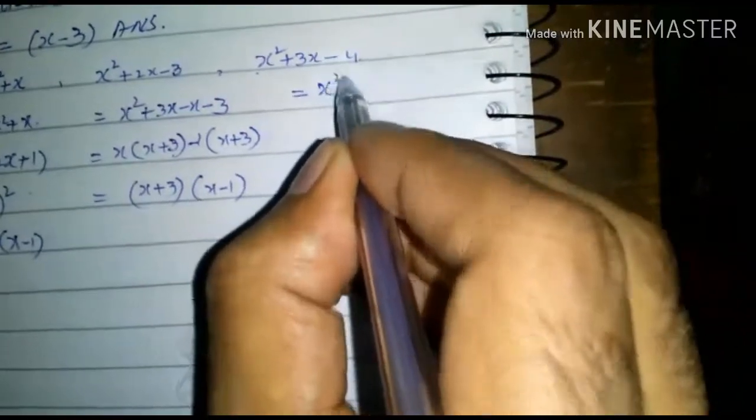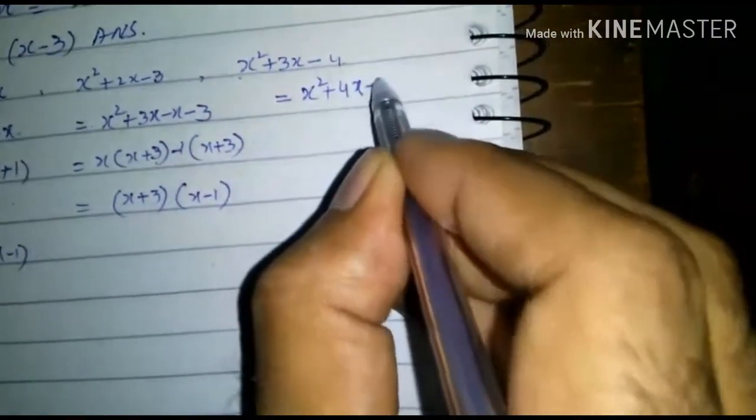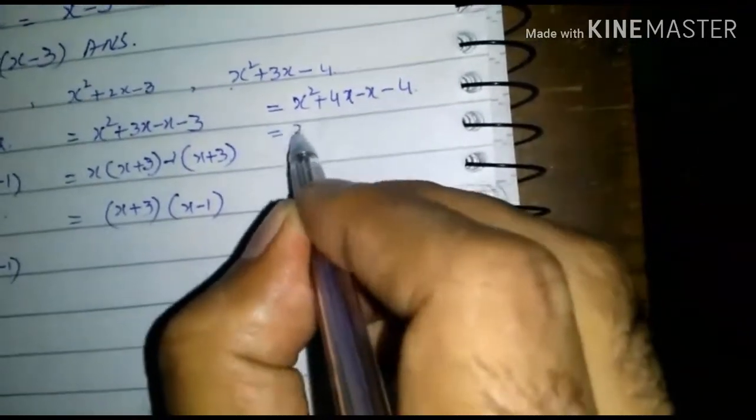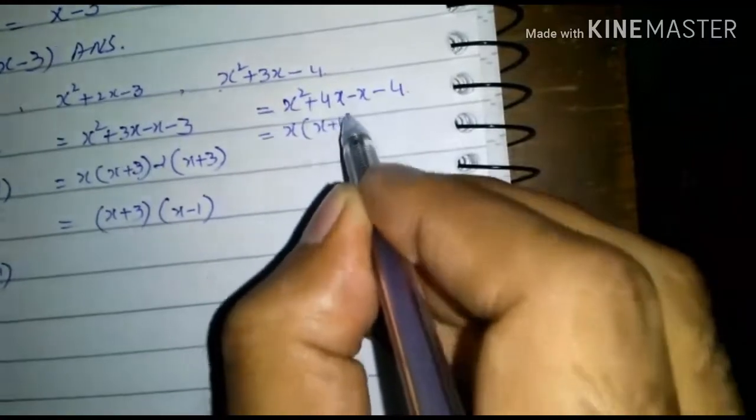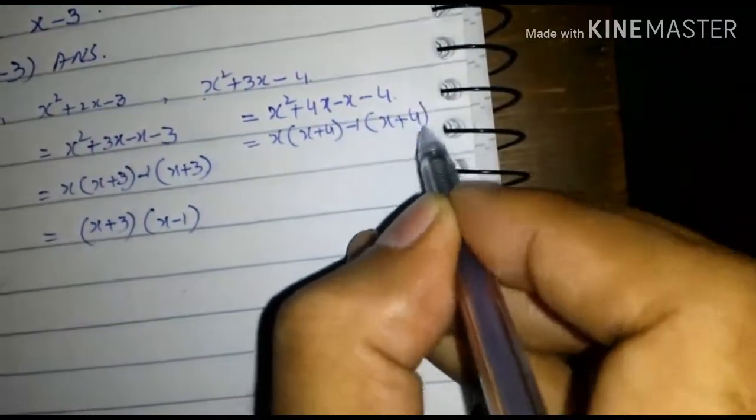This equals x² + 4x - x - 4. x is common here giving x(x + 4), and minus 1 is common here giving -1(x + 4).